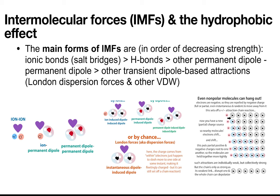Instead, these are molecules that are induced to have a dipole — a temporary dipole — either because something ionic, something fully charged, comes by, or something with a dipole comes by, or the electrons just happen to be concentrated in one place more than another. Then the molecules next to them react, because now you have this random instantaneous dipole inducing another dipole in the thing next to it, which induces a dipole in the thing next to it. You get these powerful chain reactions that individually are weak, but collectively are strong.